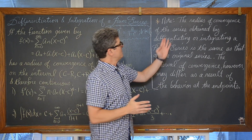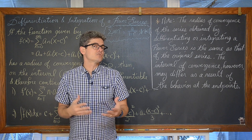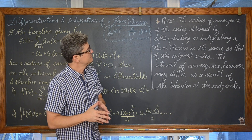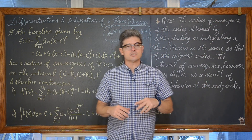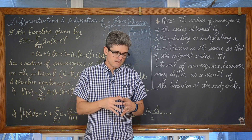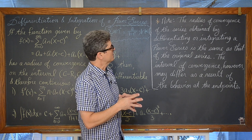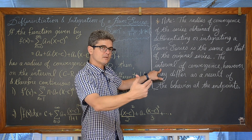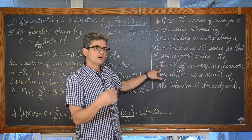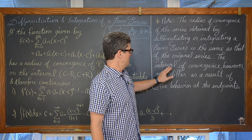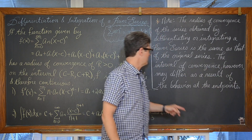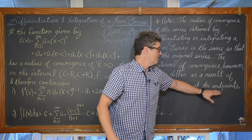The radius of convergence of the series obtained by differentiating or integrating a power series is the same as that of the original series. Notice it says the radius of convergence, not the interval of convergence. So you have the same center and the same radius of convergence, but the interval of convergence may differ as a result of the behavior at the end points.